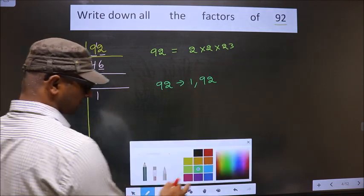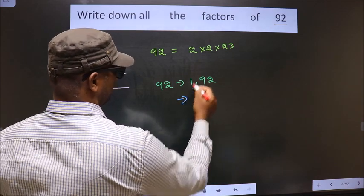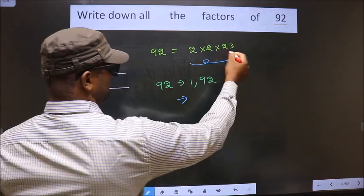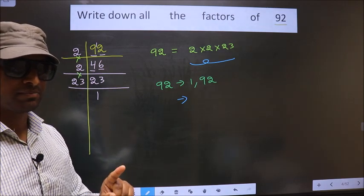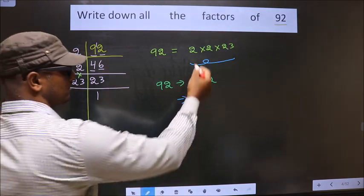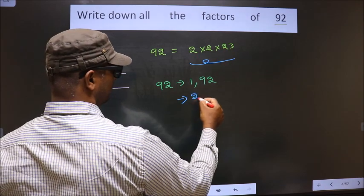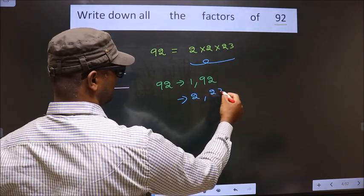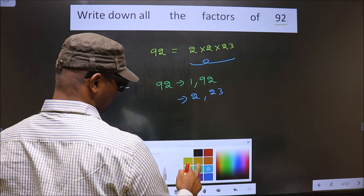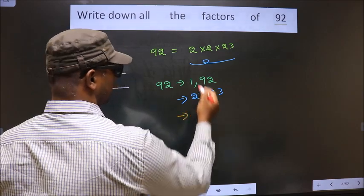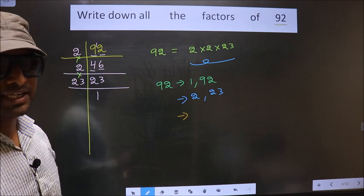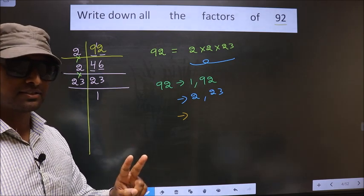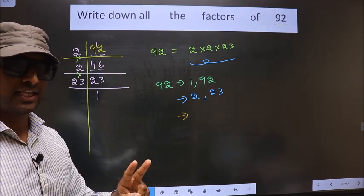Now from these numbers, select one different number at a time. So we get 2 and 23, that's it. Next, from these numbers, select a combination of two numbers. How do we do that? See.